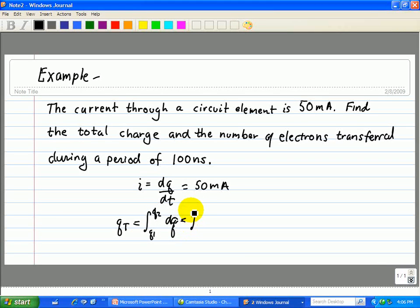Going from 0 to 100 nanoseconds. Now 100 nanoseconds is equal to 1 times 10 squared times 10 to the minus 9 seconds, or 1 times 10 to the minus 7 seconds. So our upper limit here, from 10 to the minus 7, current i dt.